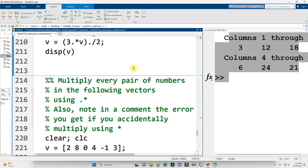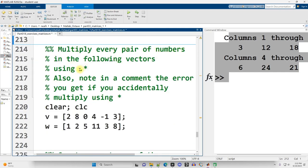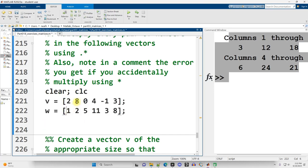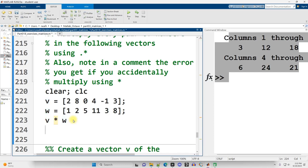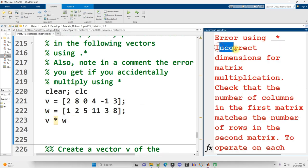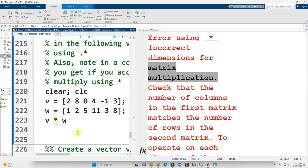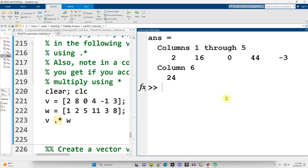Continuing on down, multiply every pair of numbers in the following vectors using dot star. All right. So when we're multiplying two vectors together pair-wise, like the 2 times the 1, the 8 times the 2, 0 times the 5, and so on, we really want to make sure to use the dot star operator. Also note in a comment the error you get if you accidentally use star. Okay. So let's just see. V star W. So this is the mistaken one. And the error we get is incorrect dimensions for matrix multiplication. I will be covering matrix multiplication in a later video, but not yet. That's not what we meant to do. What we meant to do was just do an element-wise or pair-wise multiplication. And there are our results here.